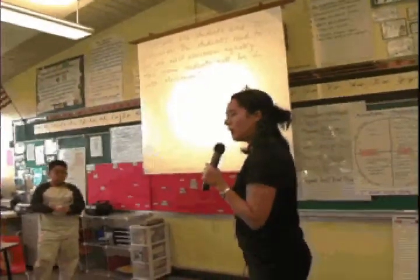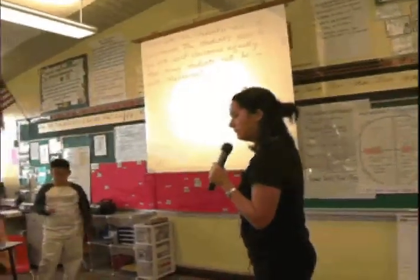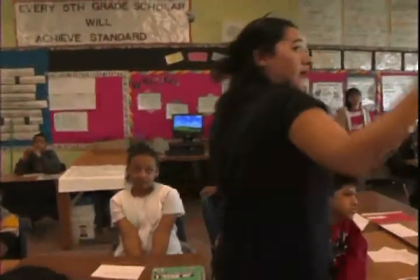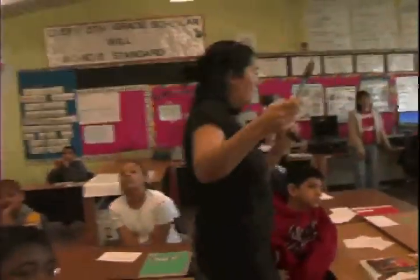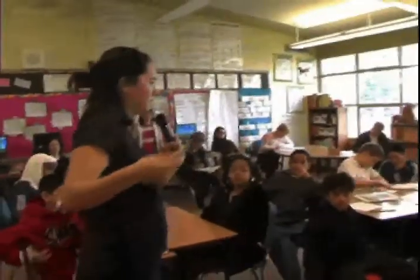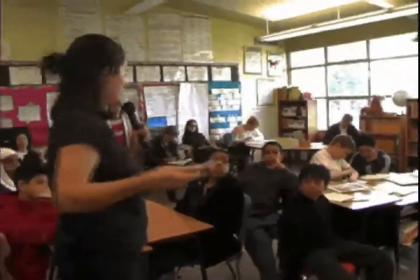Does this story problem have all the parts we talked about? Tell me what parts it has that it's supposed to have. It has a question: 'How many students will be in each classroom?' How do we know that this is a division problem that they've written? There are 12 marbles in each pack.